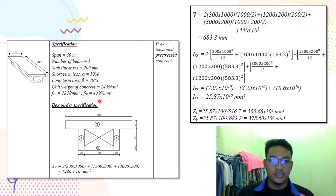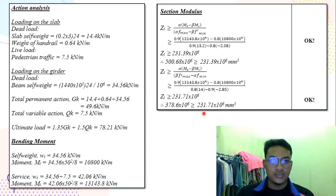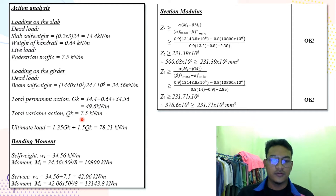For the design of the box girder, we first calculate the cross-sectional area and then obtain the ZT and ZB values. Next, we analyse the loading on the slab and transfer it to the loading on the box girder. We get the value GK as 49.6 kN/m, and the total variable load QK is 7.5 kN/m. From these, we calculate the bending moment: MI is 10,800 kNm and MS is 13,143.8 kNm.